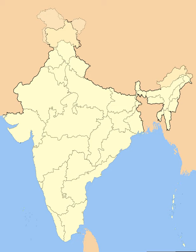The nine Part A states were Assam, Bihar, Bombay, Madhya Pradesh (formerly Central Provinces and Berar), Madhya, Orissa, Punjab (formerly East Punjab), Uttar Pradesh (formerly the United Provinces), and West Bengal. The eight Part B states were former princely states or groups of princely states, governed by a Rajpramukh, who was usually the ruler of a constituent state, and an elected legislature.